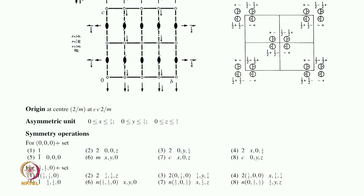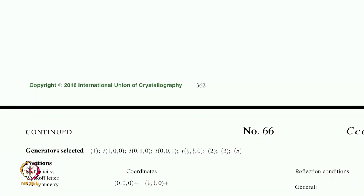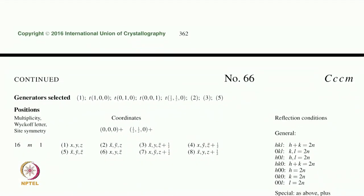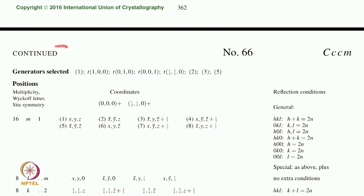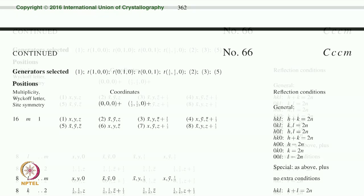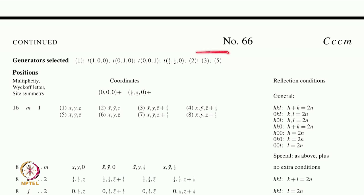Some space groups are contained in only one page of the international tables, but some are spread into two pages and some even more. This particular space group is described in two pages. The second page begins with 'continued,' indicating it is the continuation of space group number 66. The next item in the list is the generators selected.